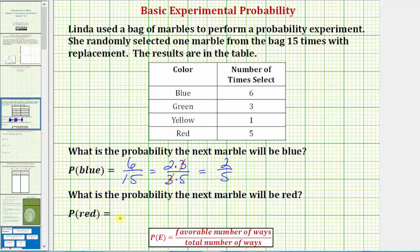Next we're asked to find the probability the next marble will be red. Because the red marble was selected five out of fifteen times, the probability of red is 5/15.